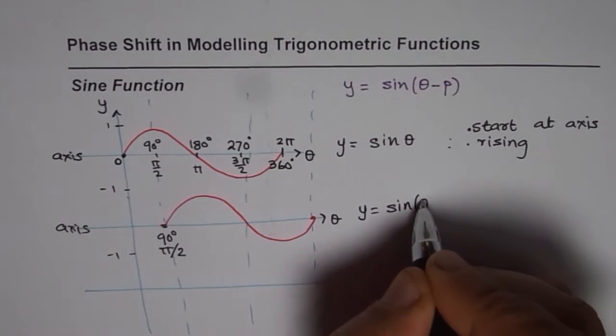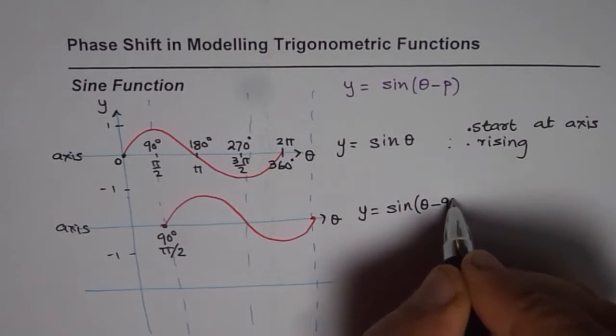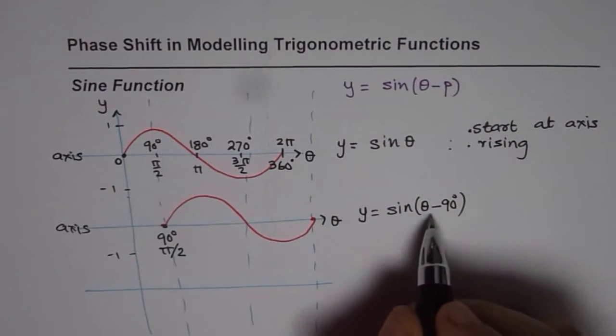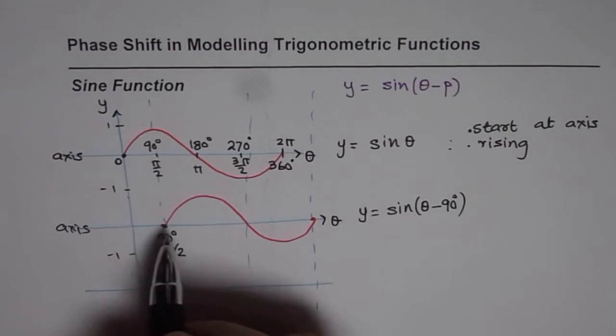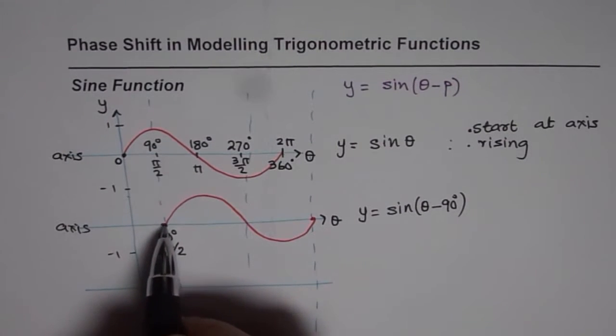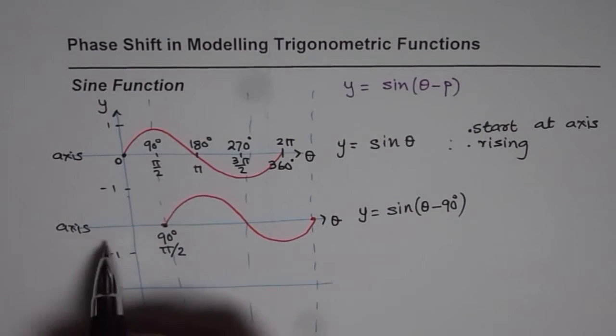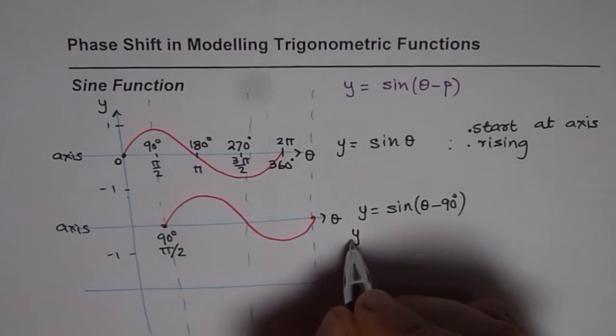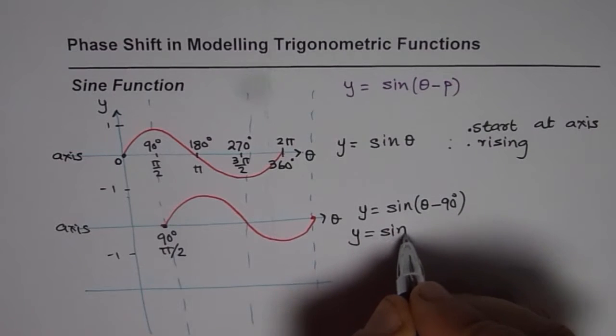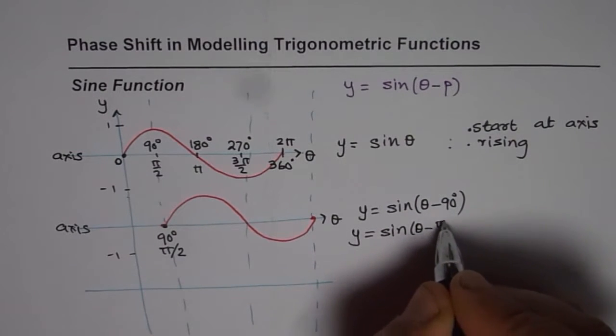So the equation for this will be y = sin(θ - 90°) for those of you who want to write it in degrees, since it has moved, the starting point of the sine wave has moved right by 90 degrees. In radians you could write this as sin(θ - π/2). So that is how you have to incorporate the phase shift.